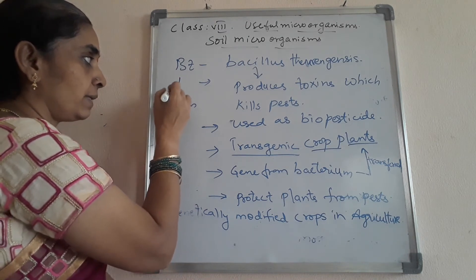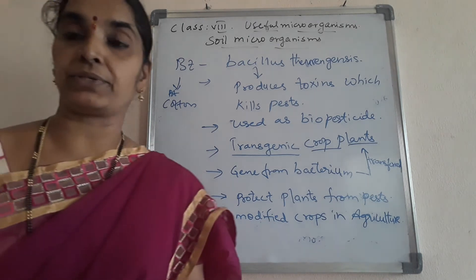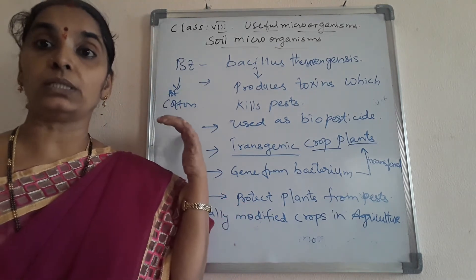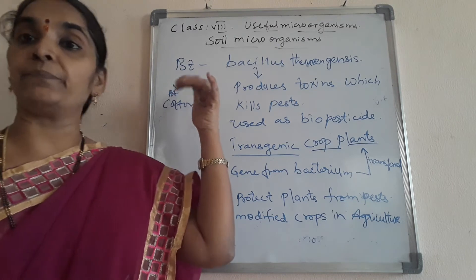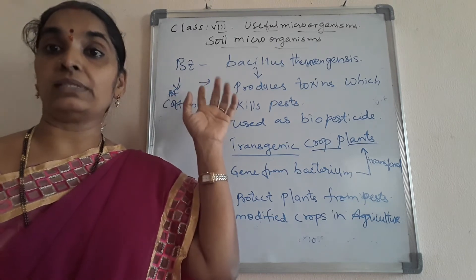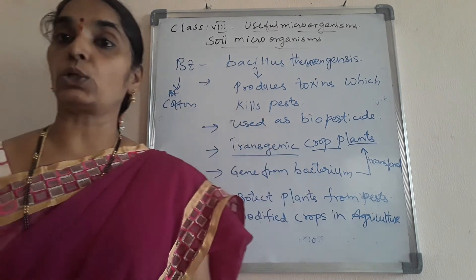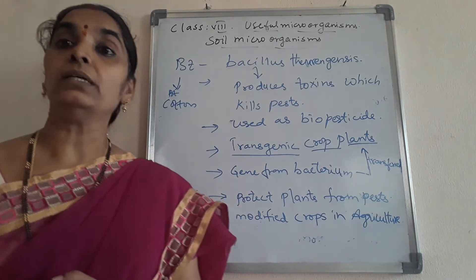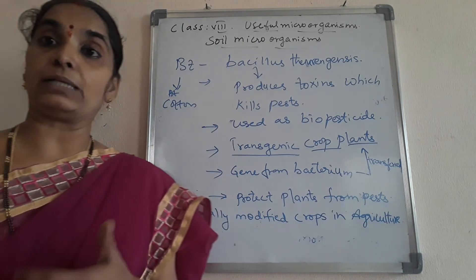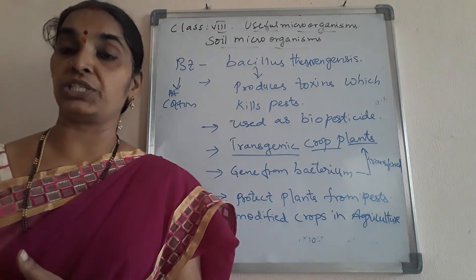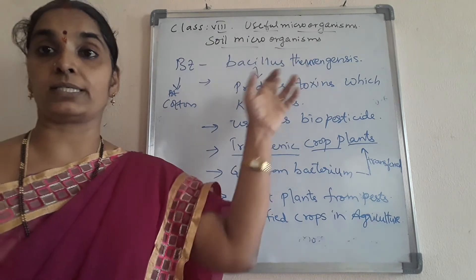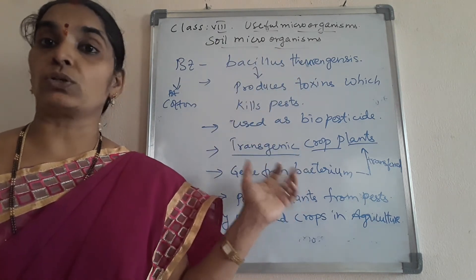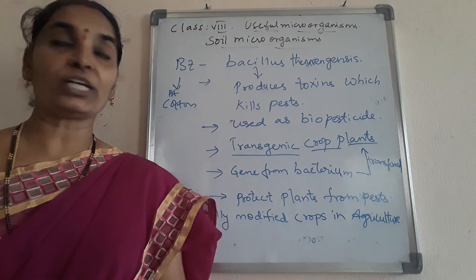In cotton cultivation, farmers use the method of transgenic crop plantation where the gene of Bacillus thuringiensis is transferred into the cotton crop plants to control pests.